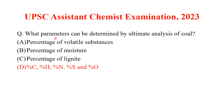The next question is: what parameters can be determined by ultimate analysis of coal? The ultimate analysis of coal measures percentage carbon, percentage hydrogen, percentage nitrogen, percentage sulfur, and percentage oxygen. Carbon, hydrogen, nitrogen, and sulfur are calculated directly, whereas oxygen percentage is calculated indirectly. The answer to this question is option D.